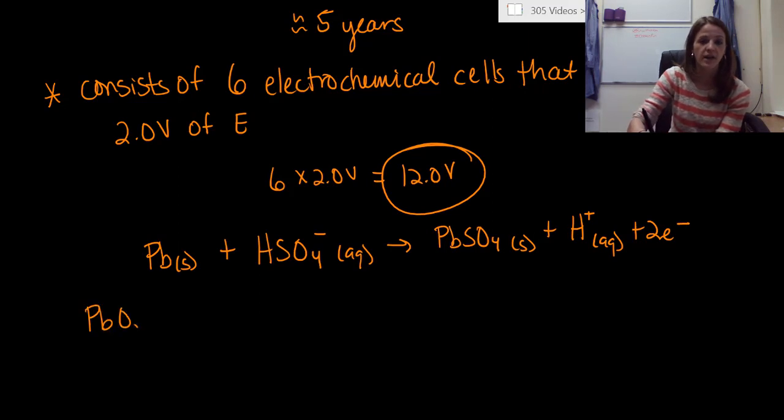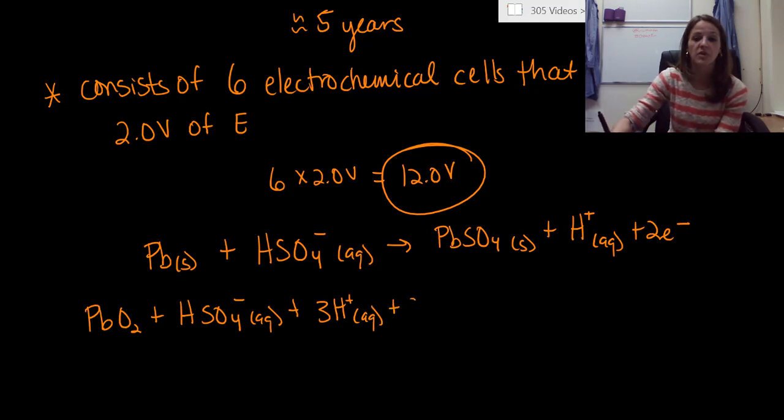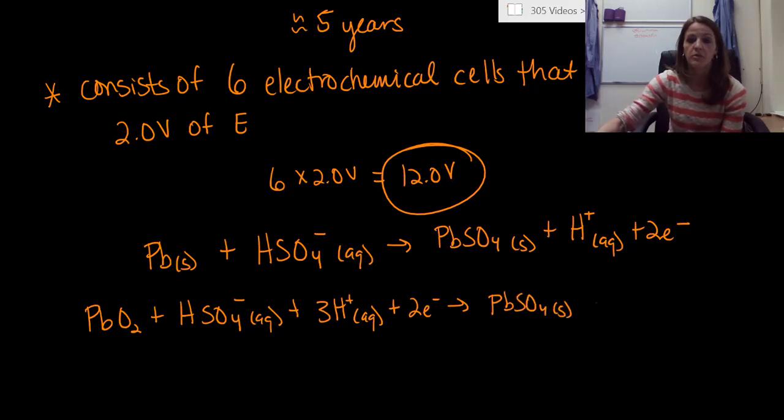So now our second half reaction starts with lead oxide and we treat it again with HSO4 minus, again in the aqueous state, plus three hydronium ions, so very strong acidic components, plus two electrons. And then our products here are going to be lead sulfate, again, plus two waters.